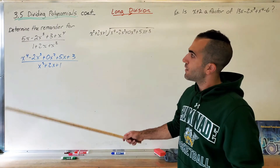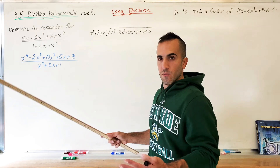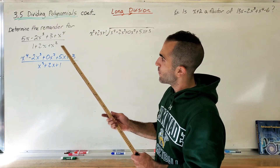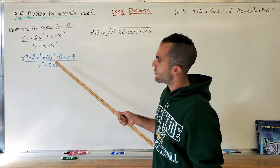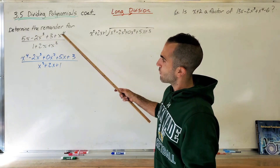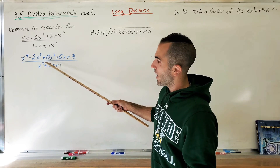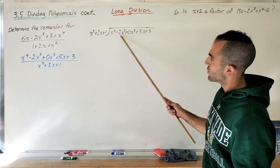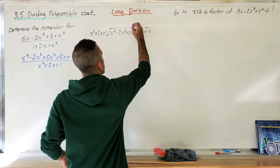Now let's kick it up a notch. Determine the remainder for this division of two polynomials. To find the remainder I need to divide. This polynomial is not in descending order, so first change everything into descending order — highest power to lowest power. If you're missing a power, like there's no x² term here, you need to add 0x² as a placeholder. Now I set up long division and need to match x² to x⁴ by multiplying by x².